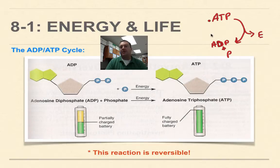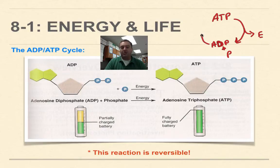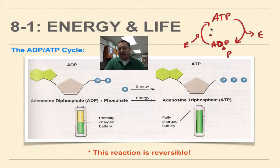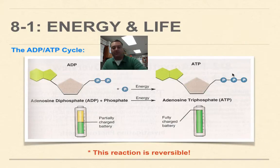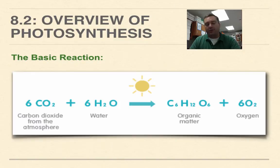When ATP breaks down to ADP, energy is released and the cell uses that energy to do work. We then have to quickly take that ADP, add energy through chemical processes to reattach the phosphate, and recreate ATP. This constant cycle runs non-stop within all living things.